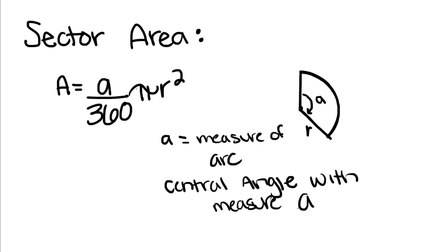Now we're going to talk about sector area. When we find sector area, we're finding the area of this region. To do that, we have area equals A, which once again is just the measure of this angle or this arc over 360 pi R squared. Because if you remember, pi R squared is the formula for area.